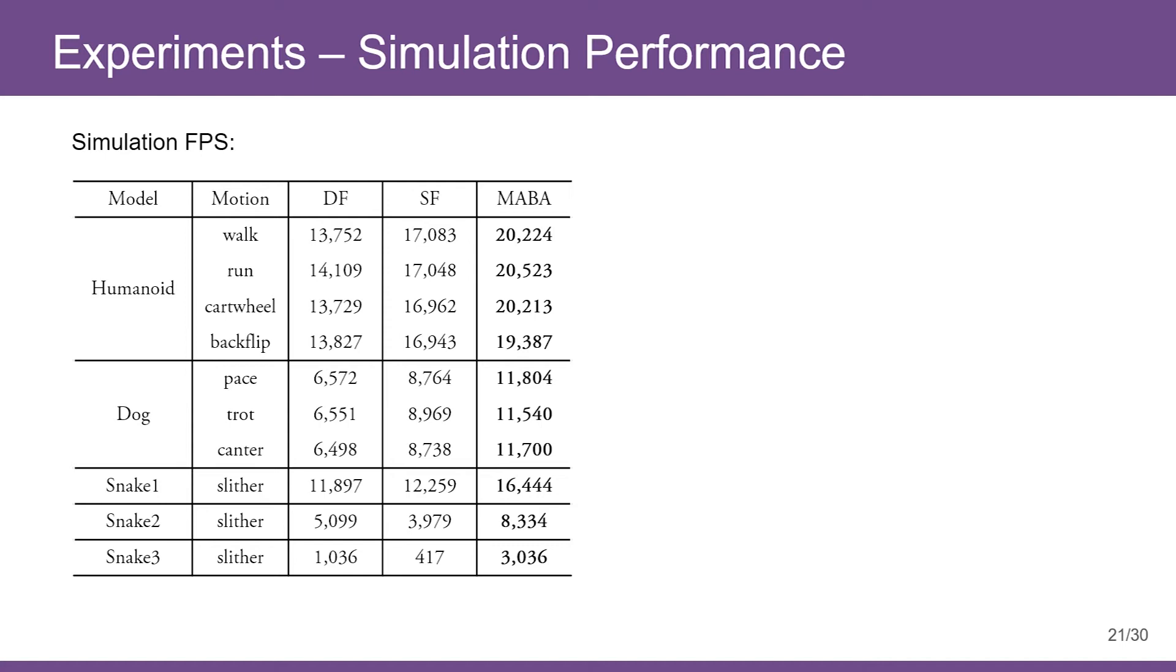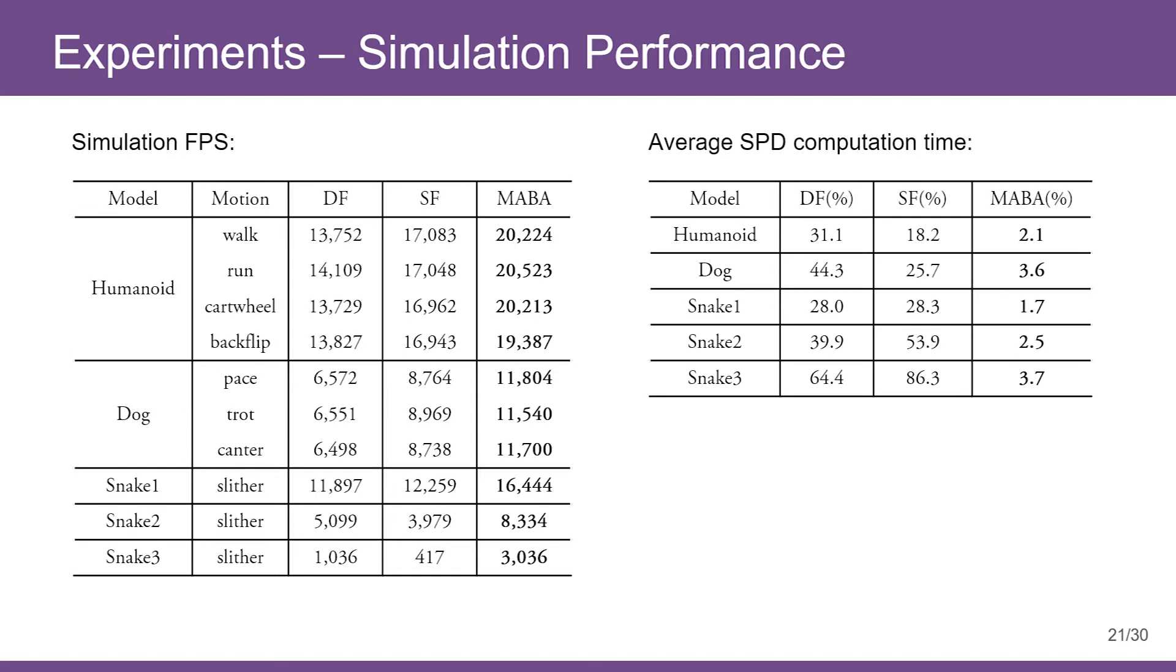The following table shows the simulation FPS data, where we can see performance advantage of MABA in all tested cases. This table shows the percentage of costs required by SPD computation. We can see that conventional SPD can take a significant portion of total simulation time on most models, while MABA incurs negligible cost in all cases, regardless of model complexity.